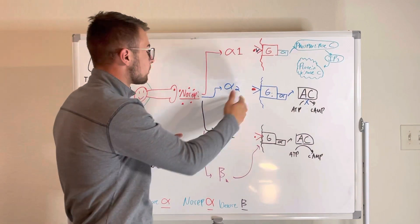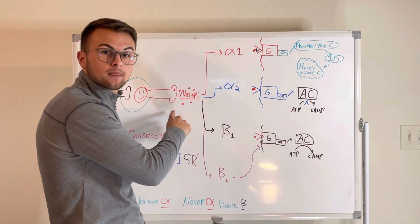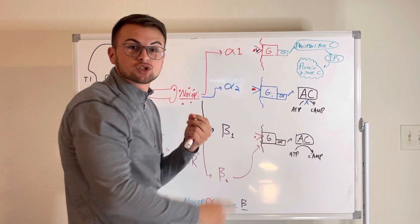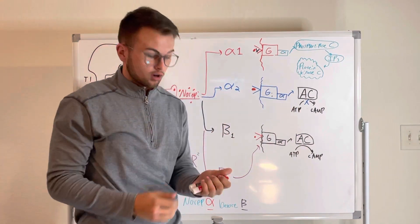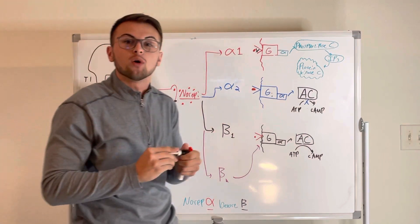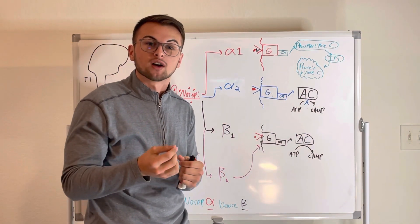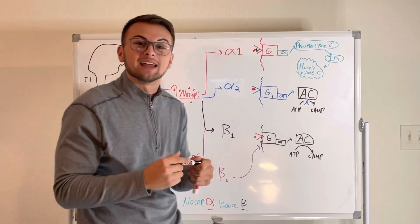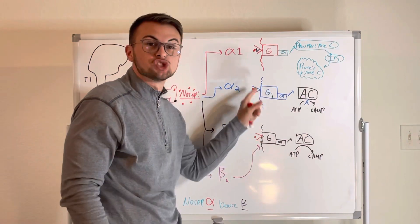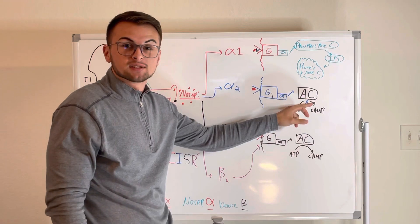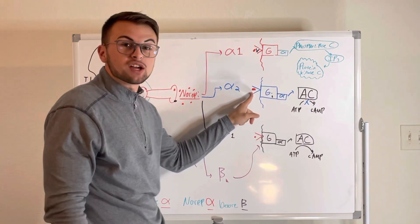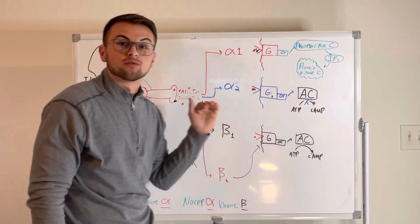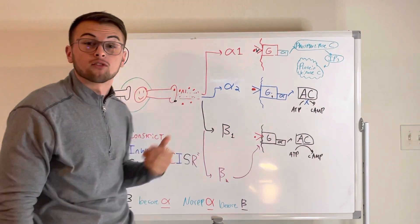So, let's say that we release some norepinephrine from a sympathetic postganglionic neuron. This norepinephrine that we release will bind to these alpha-2 receptors on the presynaptic terminal of our neurons, which will be located about right here. They bind to the presynaptic terminal of our neurons, and they will activate these inhibitory G proteins. It will activate the inhibitory G protein, which will block adenylyl cyclase. In simple terms, the activation of our alpha-2 receptors will block the release of norepinephrine from our axons of our postganglionic neurons.